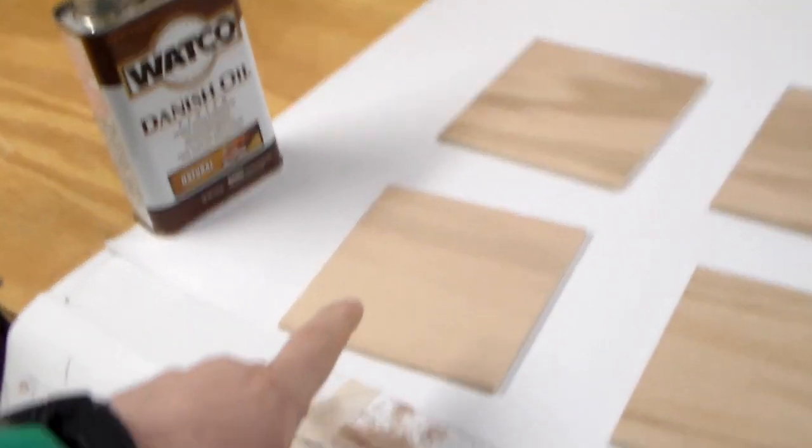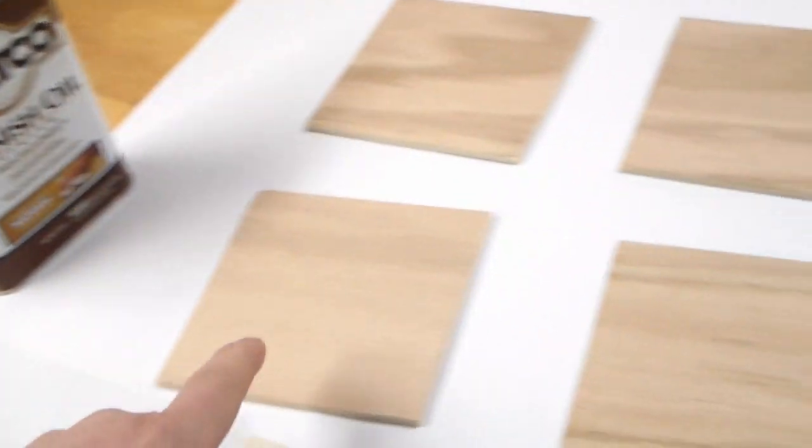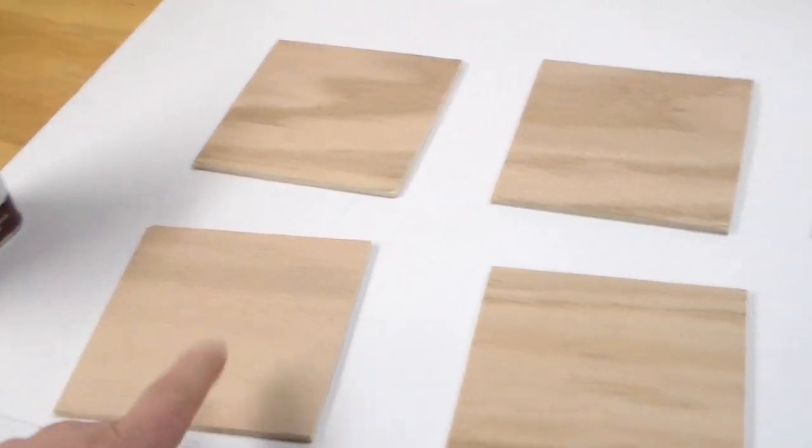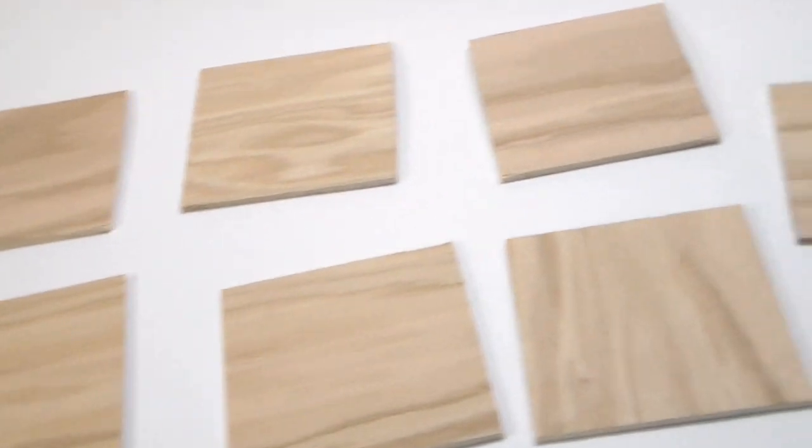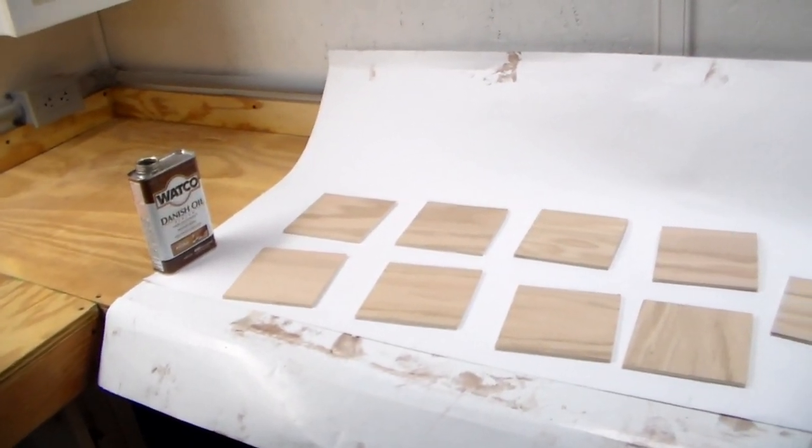Well because I'm going to be mounting these with CA glue, I can use the Danish oil to do the backing. I think with Danish oil and oak plywood it actually comes out pretty decent. So let me go ahead and get the backs all stained and ready to go.